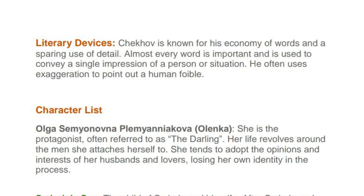The main character is Olga Semyonovna Plemyanikova, also called Olenka. She is the protagonist, often referred to as the darling. Her life revolves around the men she attaches herself to, and she tends to adopt the opinions and interests of her husbands and lovers, losing her own identity in the process.